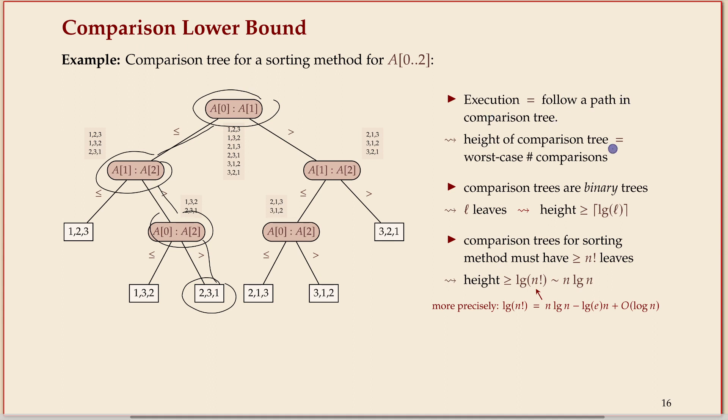And on every step I make one comparison because that's the way we defined this tree. Every step down is doing one comparison, and nothing else happens in between that we count. That means the height of the comparison tree is the maximum number of comparisons this algorithm ever does on any input. In other words, that's the worst-case number of comparisons that this algorithm does.